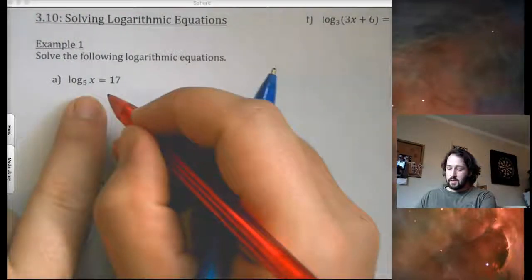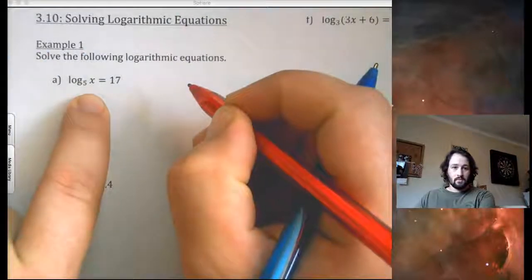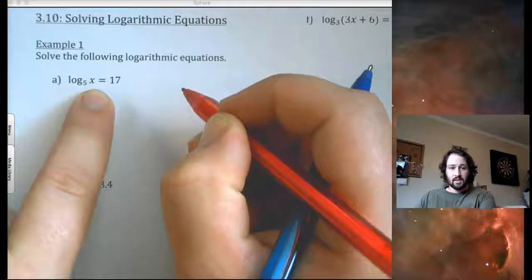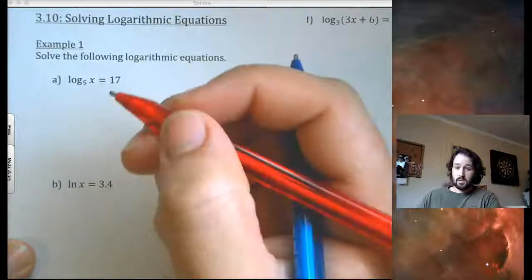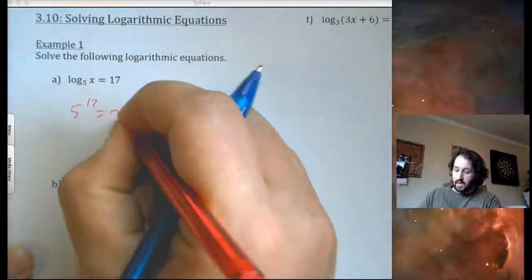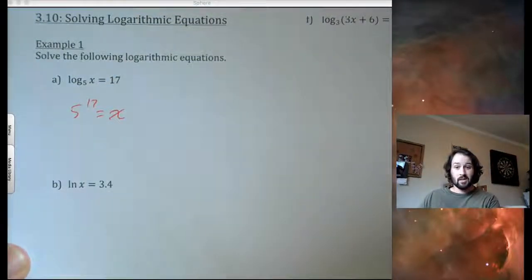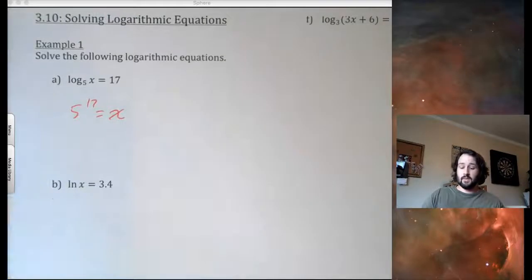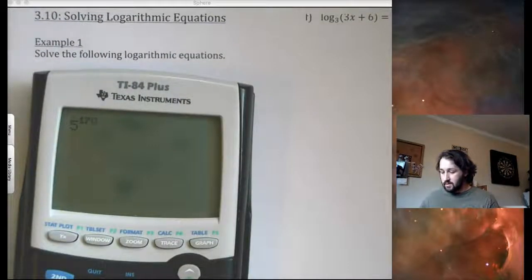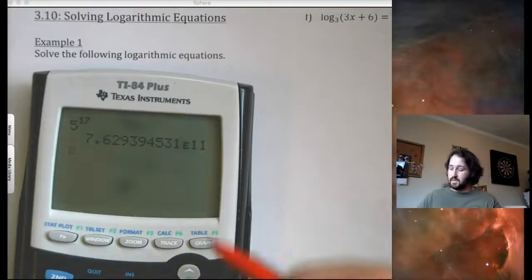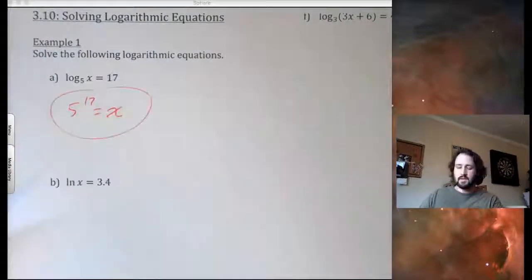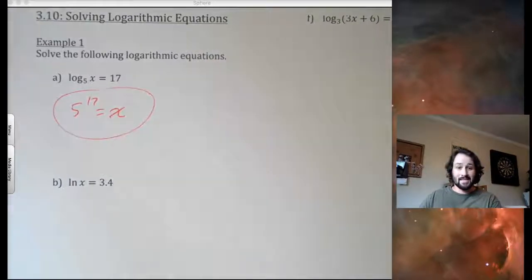With these, I'm kind of stuck in log form. I don't have anything on the outside multiplying. I don't have plus or minus anything. So what I'm going to do is I'm just going to put it in exponential form. So, 5 to the 17 equals x. That's a really big number. My guess is my calculator won't even do it, probably. So, 5 to the 17th. Look at that. It did, but it's times 10 to the 11th, so it's a huge number. So, I would just leave it like that. X equals 5 to the 17th. That's it.